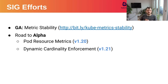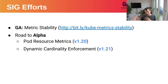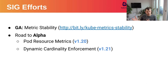Another really neat feature is dynamic cardinality enforcement. With metrics, what can potentially happen if we're not careful with our reviews is cardinality explosion. We have some tooling that prevents as many mistakes as possible, but no human is perfect. This is essentially a fail-safe mechanism: if a cardinality explosion accidentally happens in a Kubernetes cluster, we can use some configuration to prevent it in place rather than patching the entire codebase.